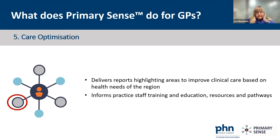If a prompt isn't correct, the GP can give timely feedback back to the Primary Sense team. For instance, sometimes we get cardiovascular prompts for high-risk patients that might be on weight loss medications like Ozempic — the computer thinks they're diabetic and therefore high risk and should have cardiovascular medications prescribed. You can give that feedback to help keep Primary Sense current and evidence-based.